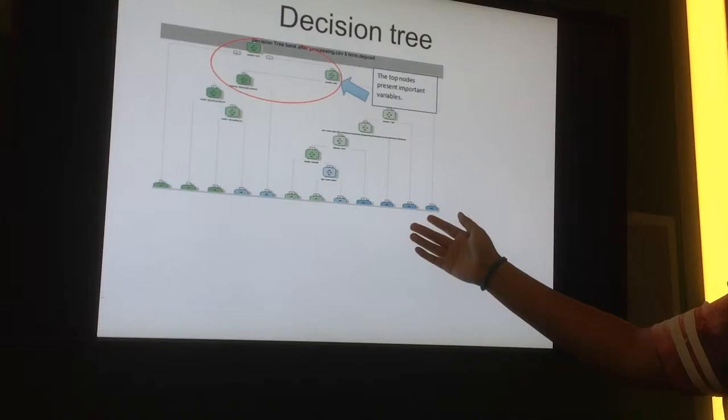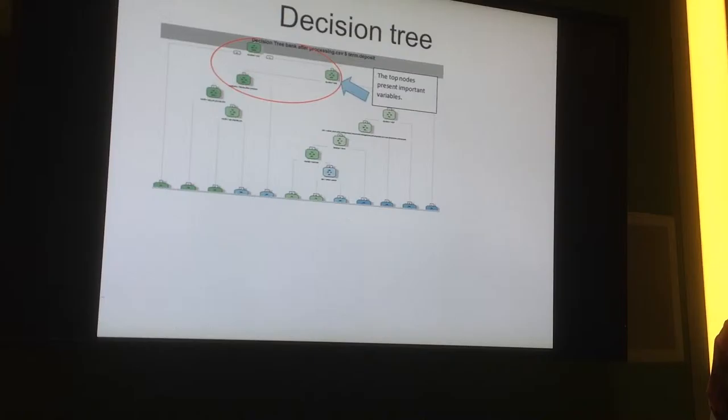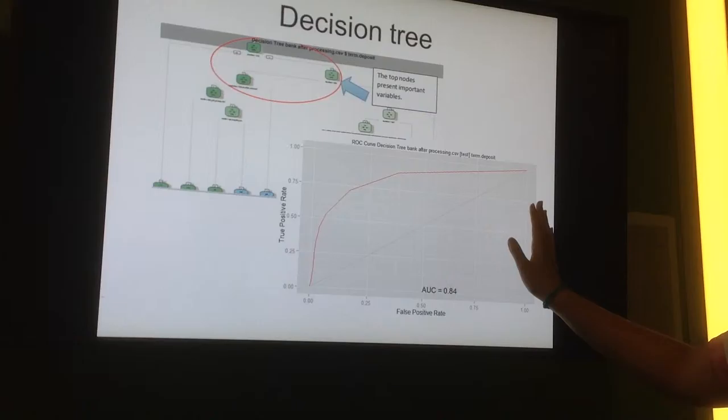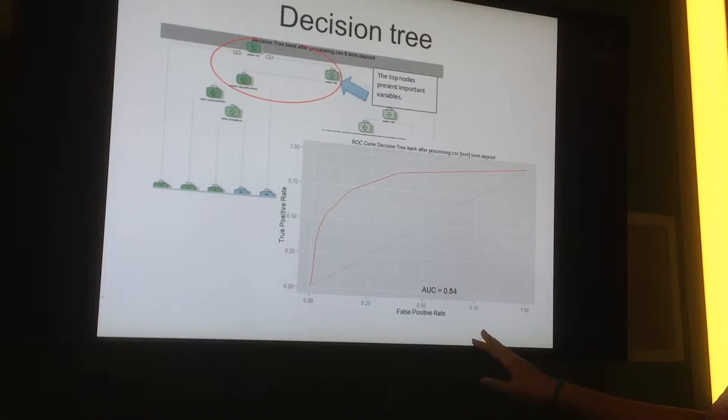The first one is decision tree. You can see the tree looks like that, and the top nodes present important variables, which are very important to predict the target values. And this is the ROC curve. The area under the curve presents the accuracy of this tree, and this one is 84%.